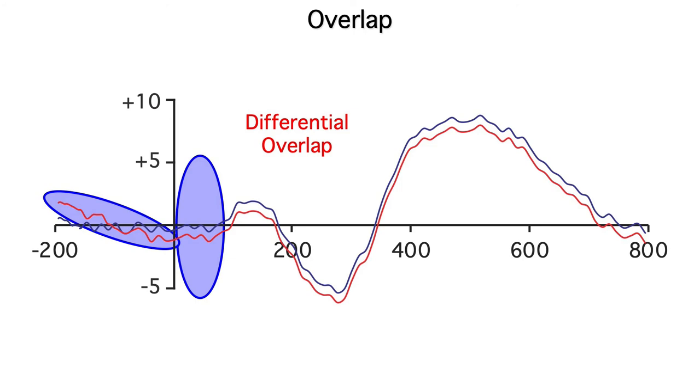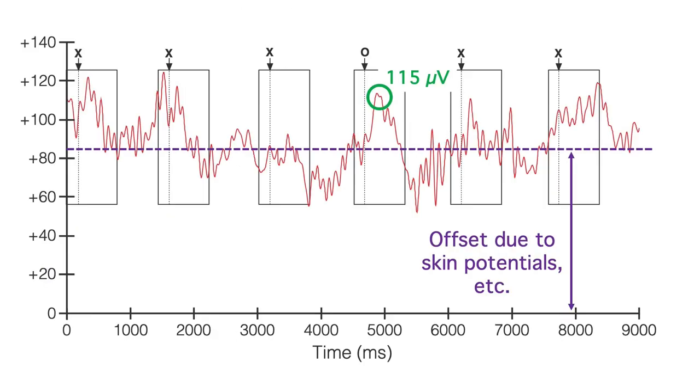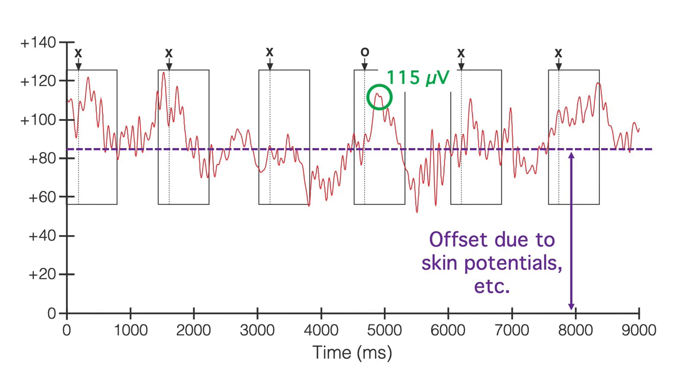You might wonder why we bother with baseline correction, given that it tends to exacerbate the impact of differential overlap. But we have to get rid of the voltage offsets. They can add hundreds of microvolts of uncontrolled variance to the data. There are other methods for dealing with these offsets, but these other methods also have shortcomings. And in about 99% of cases, I find that a combination of baseline correction and careful experimental design is the best approach.